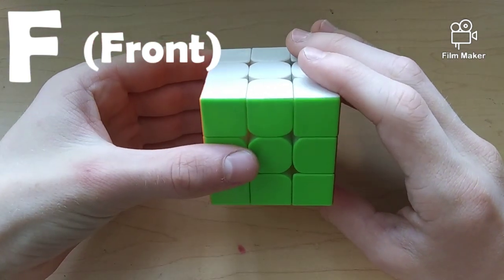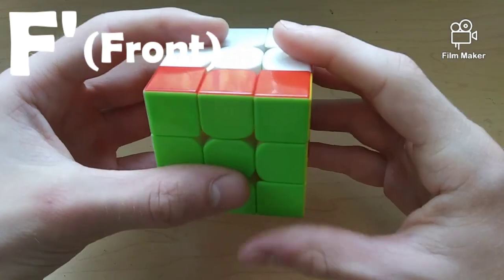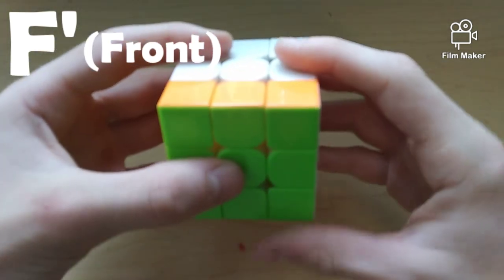And then we have F, which means front side, so we'll move the front clockwise. And F', which is counterclockwise on the front side.